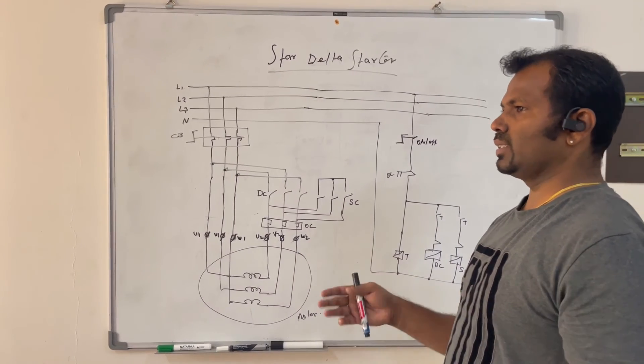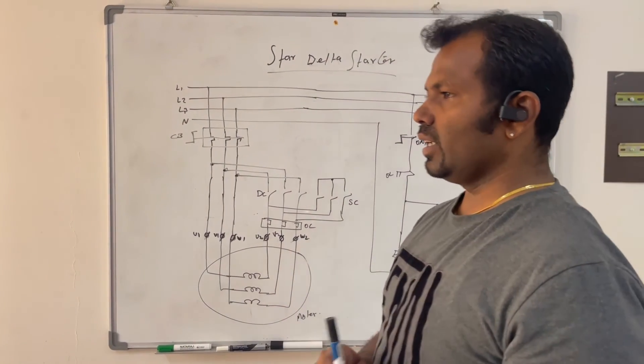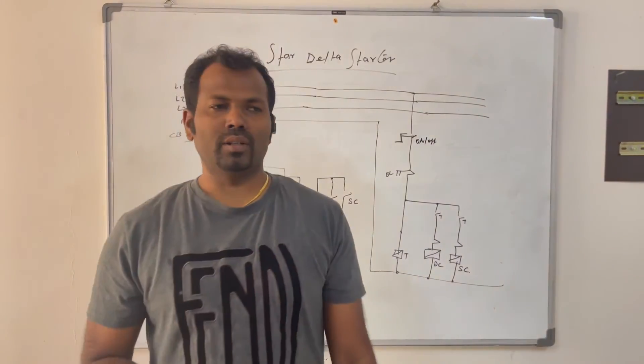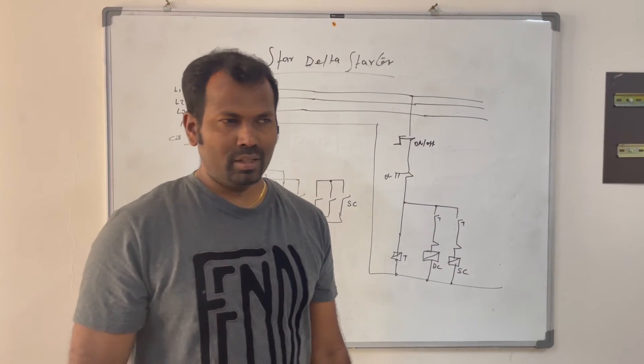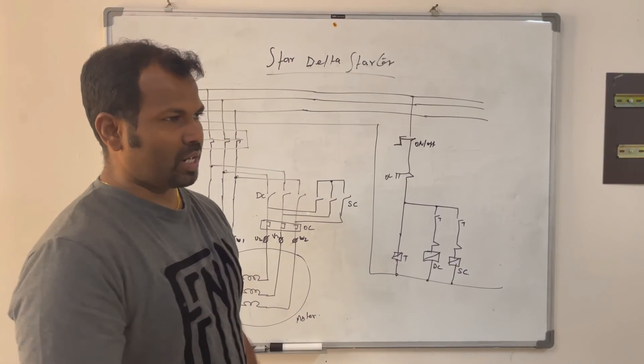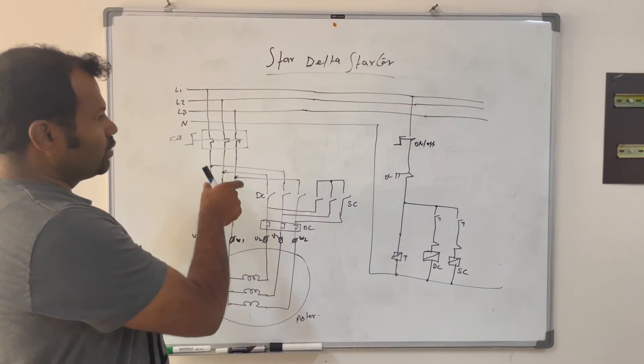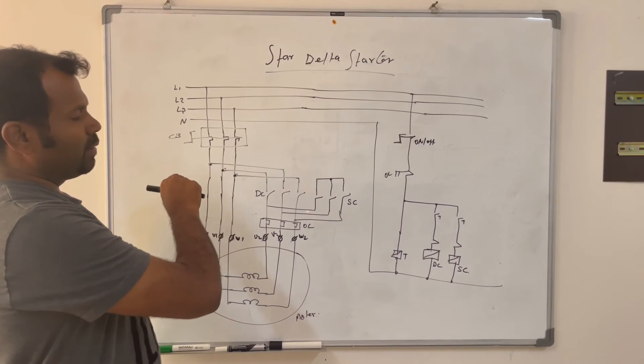If your starter, that means if your equipment is operated manually on a daily basis, you can use this kind of star delta starter. You can put the power off and you can maintain the safety.